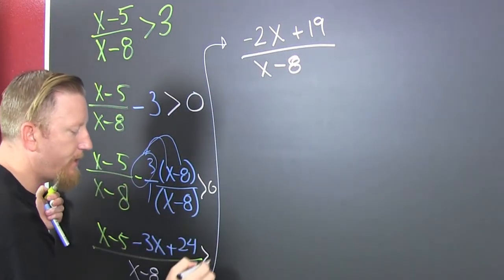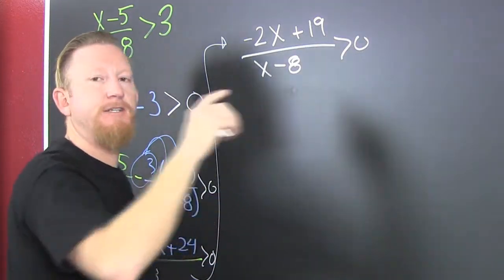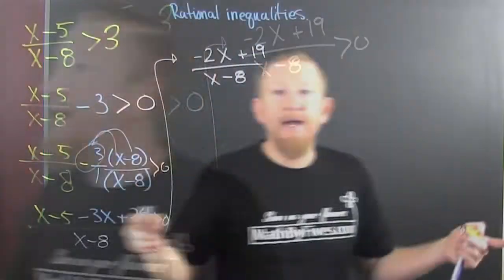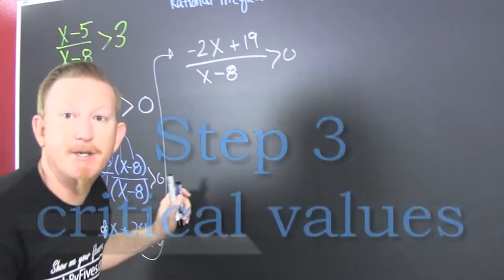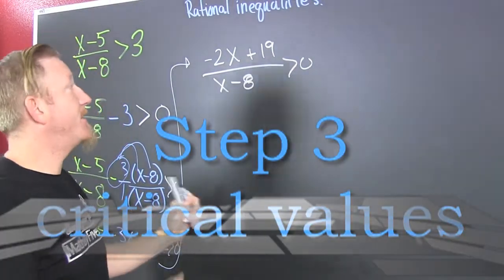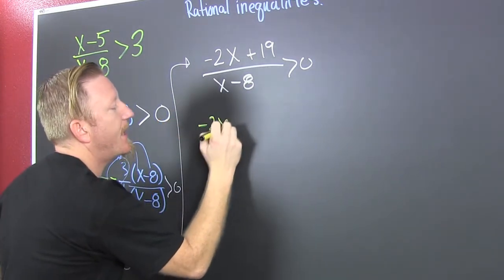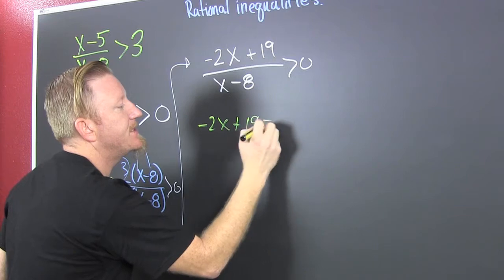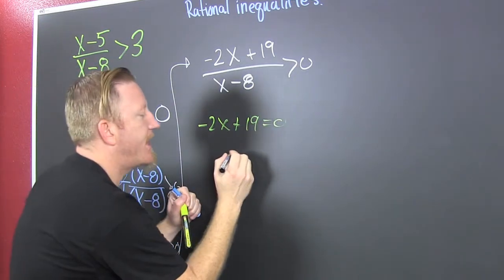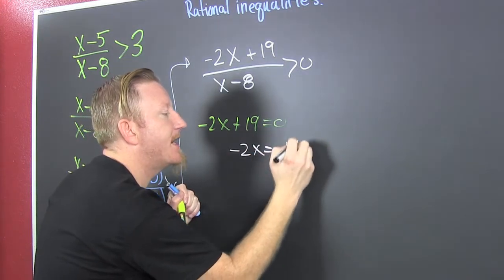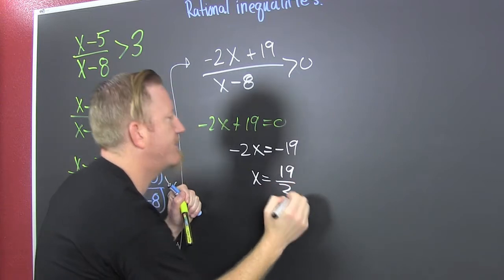That needs to be bigger than 0. Now that we have one fraction, we find the zeros of the numerator and denominator. We set the numerator equal to 0: minus 2x plus 19 equals 0. Subtract off that 19: minus 2x equals minus 19, so x equals 19 halves.